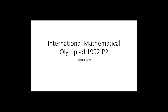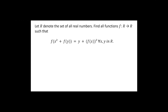Hello everyone. My name is Ricardo and today I will be presenting Problem 2 of the International Mathematical Olympiad in 1992. The problem goes as follows: let R denote the set of all real numbers, and find all functions f from R to R such that the given functional equation holds for all x and y in R.